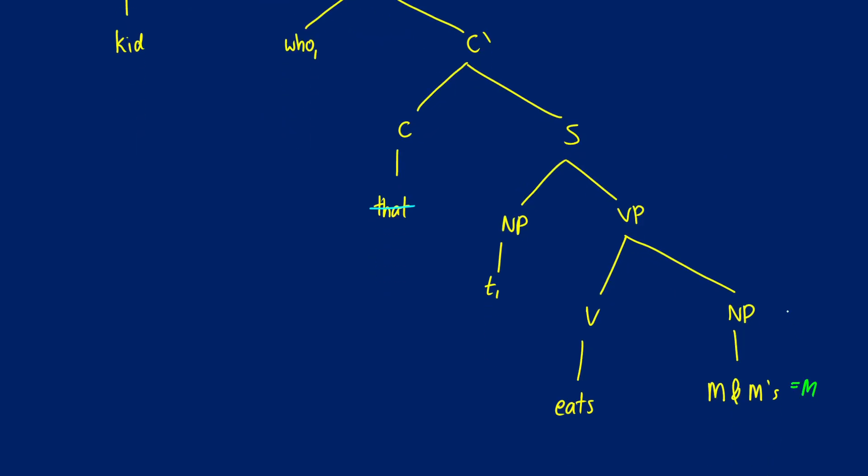M&M's, I'm just going to call this M. So this will be M going up the tree. "Eats" will be lambda Y dot lambda X dot X eats Y. I'm not going to put these on every single node. So when we fill in at the VP, we're going to get lambda X dot X eats M.